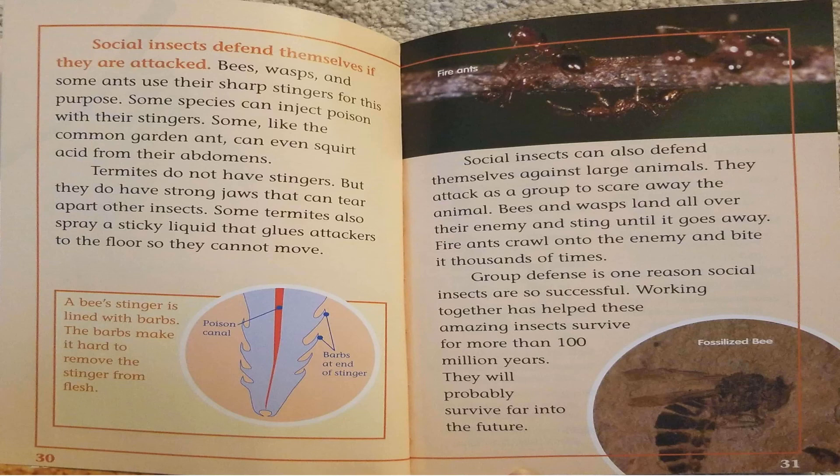Termites do not have stingers, but they do have strong jaws that can tear apart other insects. Some termites also spray a sticky liquid that glues attackers to the floor so they cannot move. A bee's stinger is lined with barbs. The barbs make it hard to remove the stinger from flesh. Social insects can also defend themselves against large animals. They attack as a group to scare away the animal. Bees and wasps land all over their enemy and sting until it goes away. Fire ants crawl onto the enemy and bite it thousands of times. Group defense is one reason social insects are so successful. Working together has helped these amazing insects survive more than 100 million years. They will probably survive far into the future.